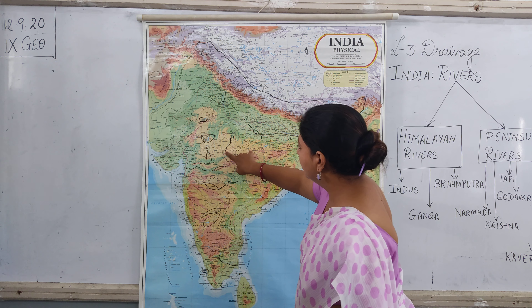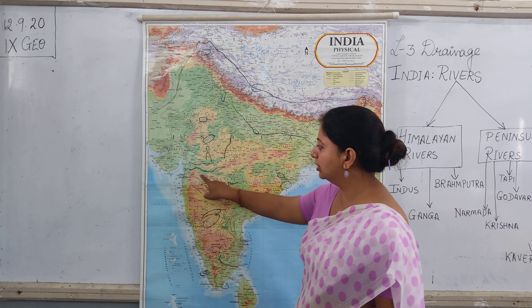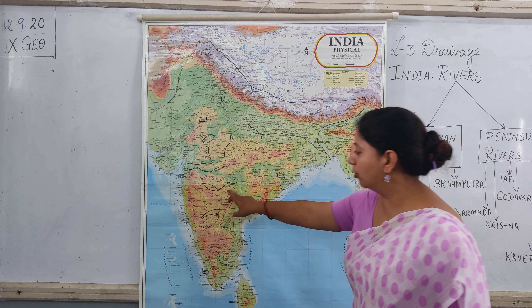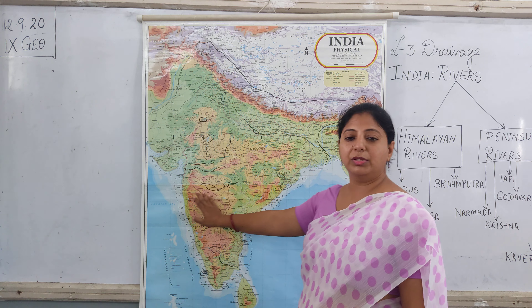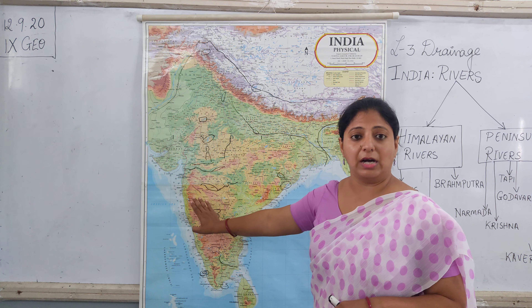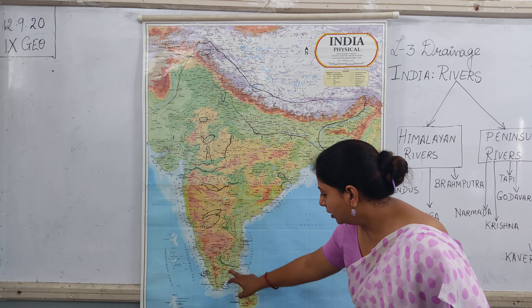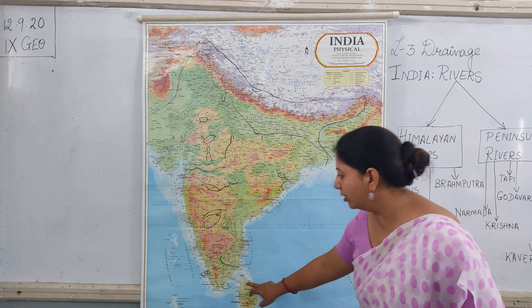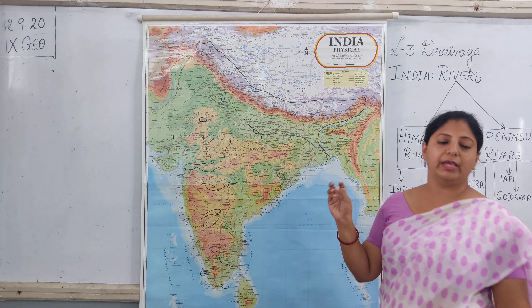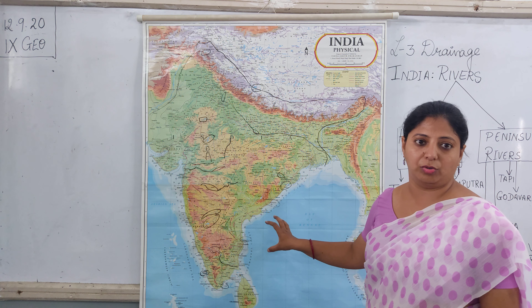Now coming to the peninsular rivers, here we have Betwa, here we have the Narmada river, the Tapi river, here you have the Godavari river coming from the Western Ghats. Then you have the Krishna river, the Tungabhadra river, and here you have your Kaveri river.